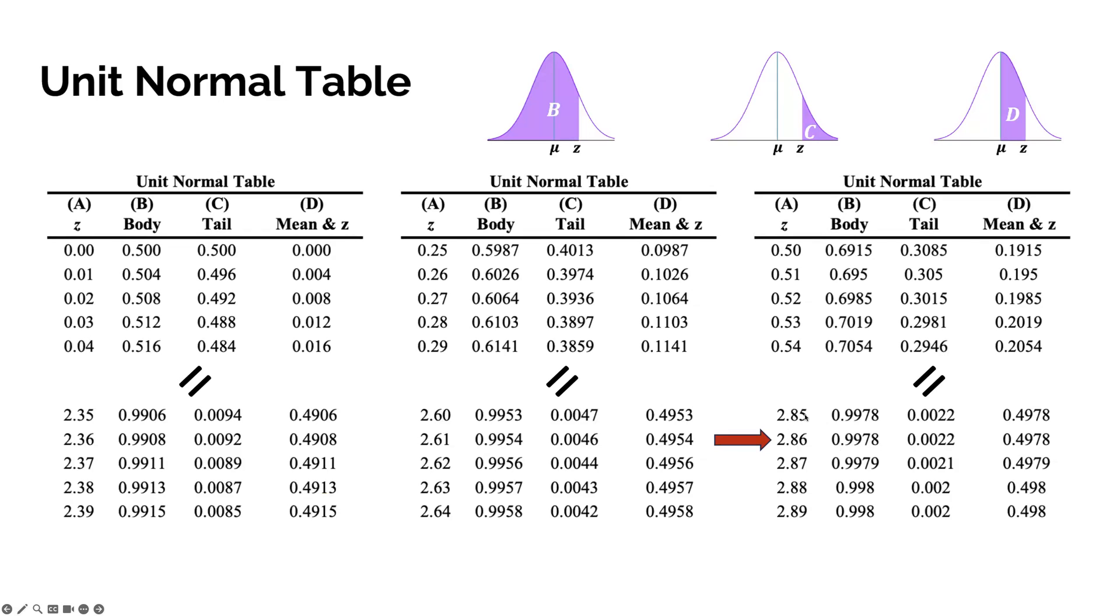Because we are looking in the body, we have the majority of the unit normal table, we're looking at this 0.9978. We've just discovered that about 0.9978 of this entire distribution would fall below 90. If we were to make this a percent, we could move our decimal point two numbers to the right, and that would be 99.78%. Almost 100% of scores are going to fall below that score.